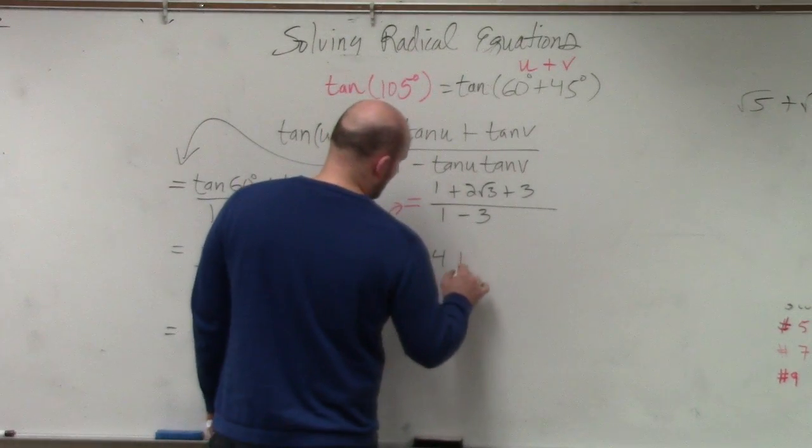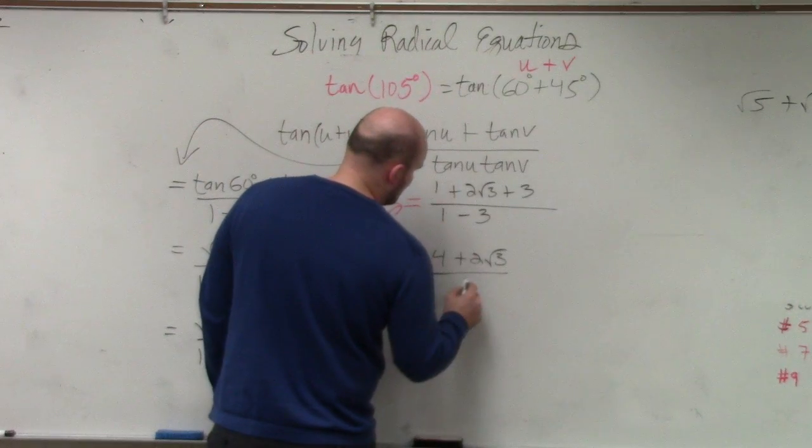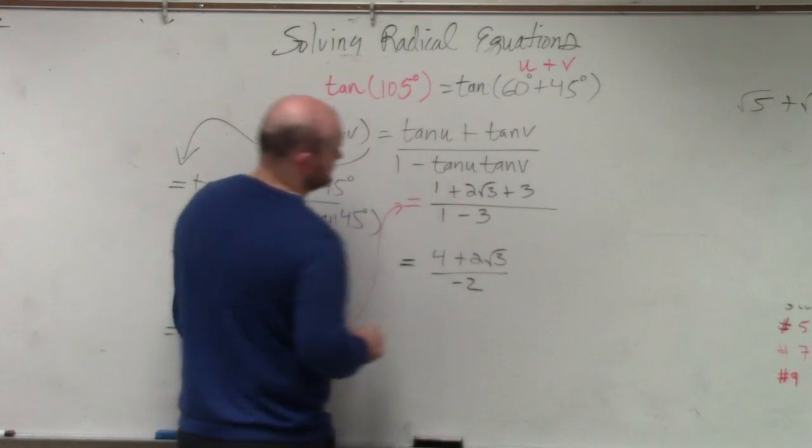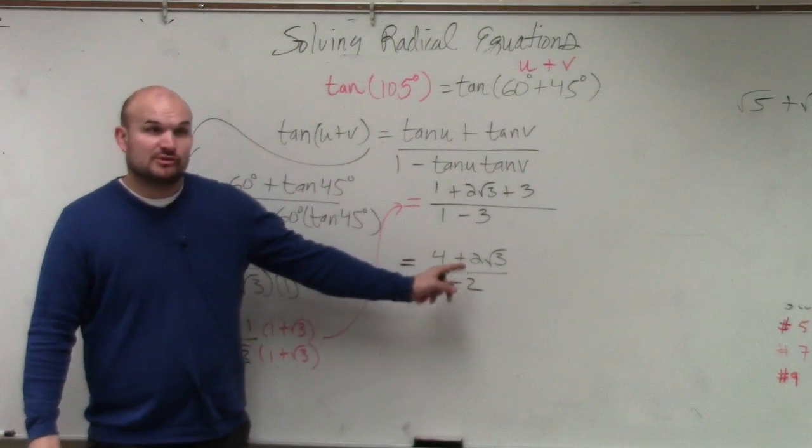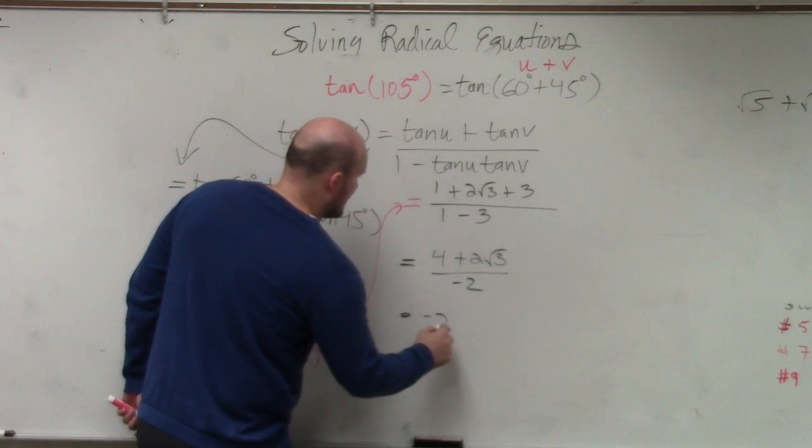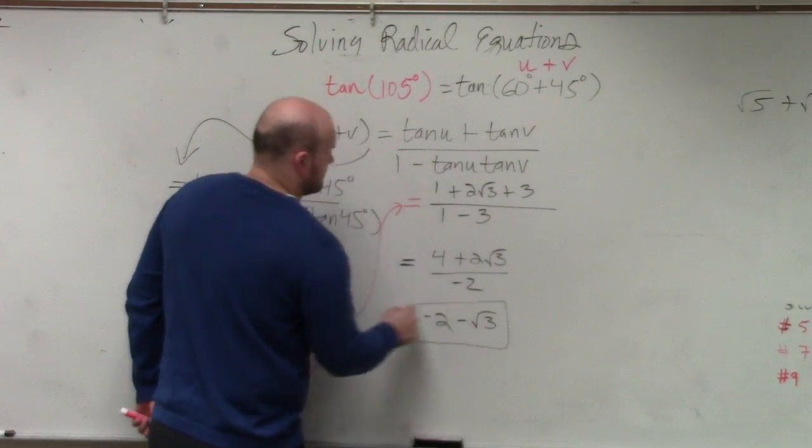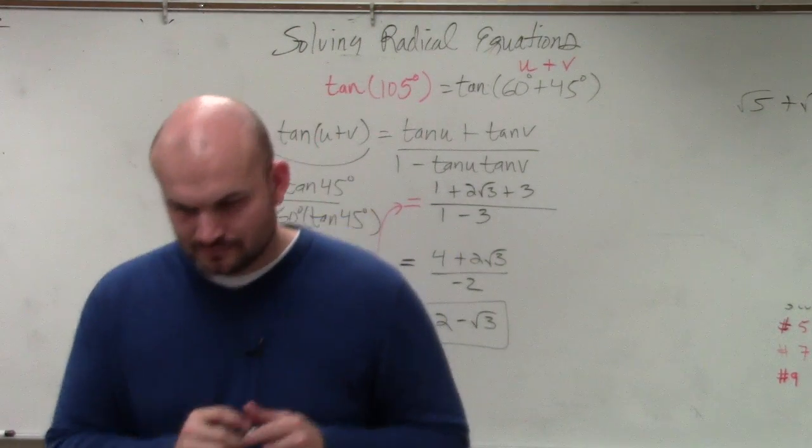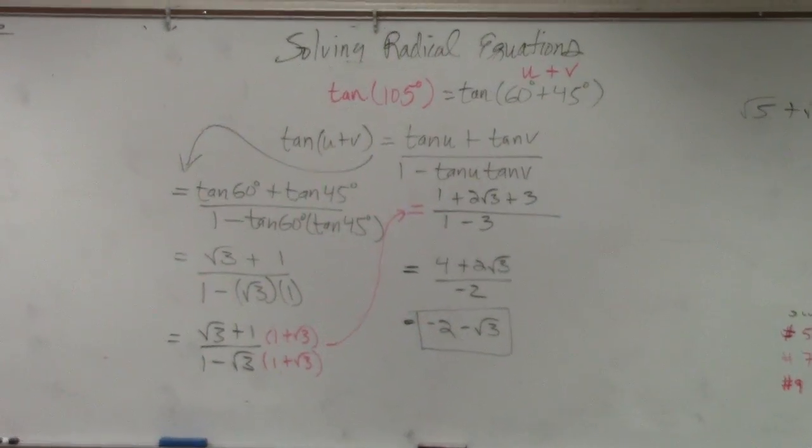So therefore, I end up with 4 plus 2 square root of 3 divided by 2, or negative 2. Then this negative 2, just like distributive property, can divide into both of those. So my final answer is a negative 2 minus the square root of 3. Done. And I didn't even do a hard tan.